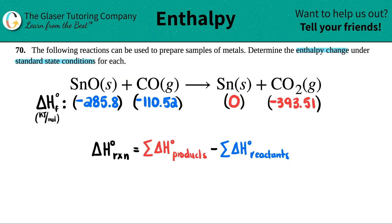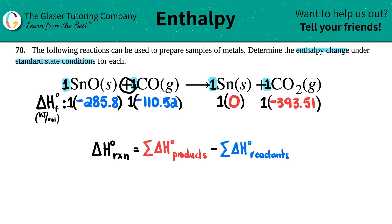I don't see any coefficients here, so don't assume it's balanced — always double check. Scanning now to see if this equation is balanced, and actually it is. So all of the coefficients are one. If I have one SnO, I times that number by one. Since I have one CO, I times that number by one. I have one Sn, so I times one times zero. Then I have one CO₂, so I times negative 393.51 by one. You add the two reactant values together and the two product values together — that gives one number for each side.